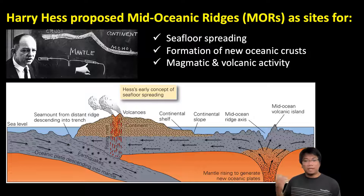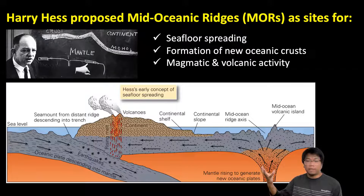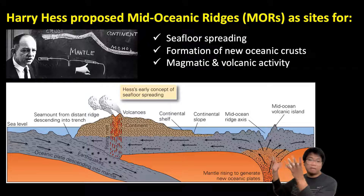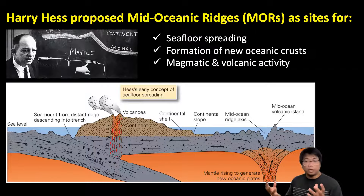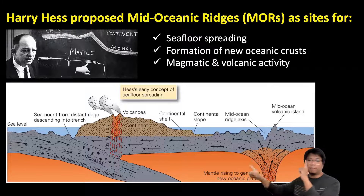In this diagram, seafloor spreading at the Mid-Ocean Ridge is represented by this area right here. This is where magma from the mantle comes out to the surface. Once the magma reaches the surface, it solidifies and becomes new rocks, or new oceanic crust. This is all possible because of the movement of the seafloor moving away from each other, which creates space right in the middle.